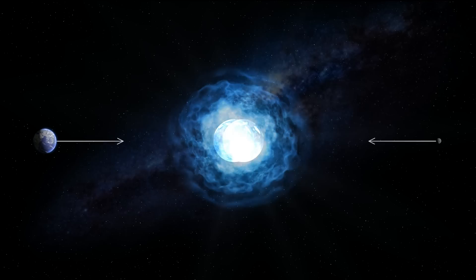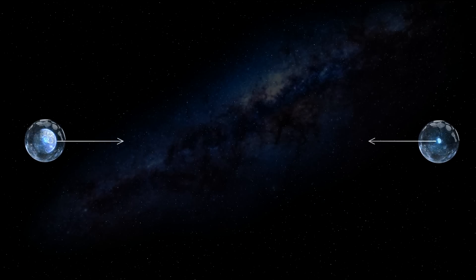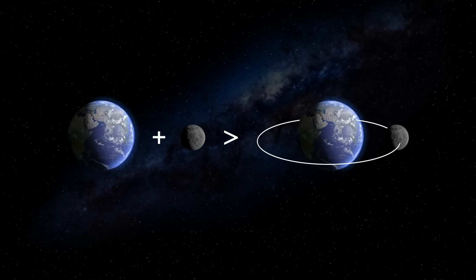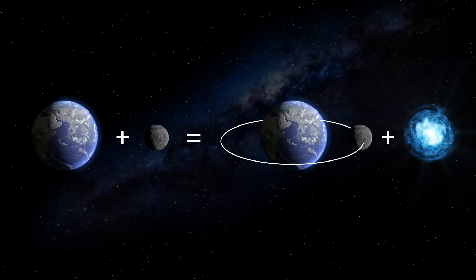The bonding energy between the two are converted to mass. Thus, each of their masses are bigger when they are apart than when they are bound with gravity. The sum of Earth's mass and the mass of the moon equals the combined mass of Earth and the moon plus the bonding energy between the two.